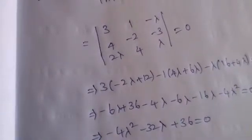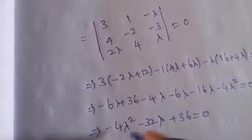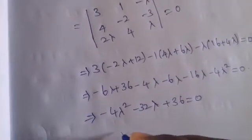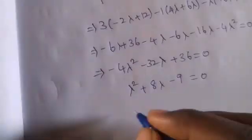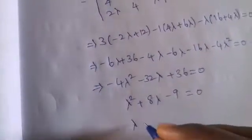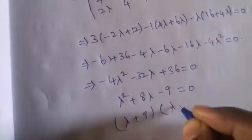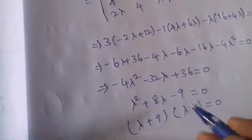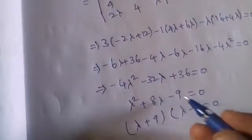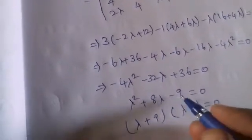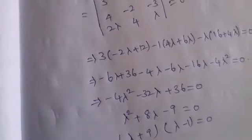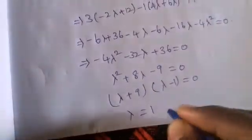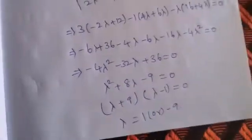Dividing through by −4: λ² + 8λ − 9 = 0. Factoring: (λ + 9)(λ − 1) = 0. Therefore, the values of λ are 1 and −9. Thank you.